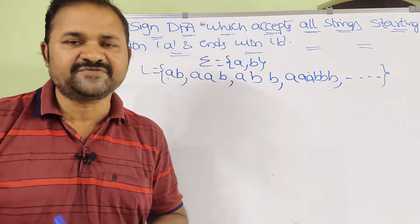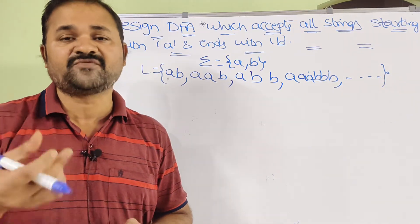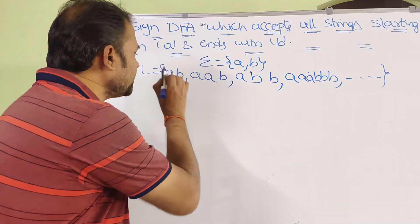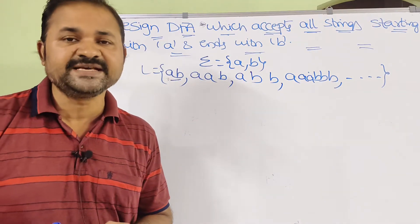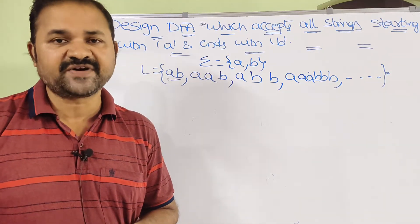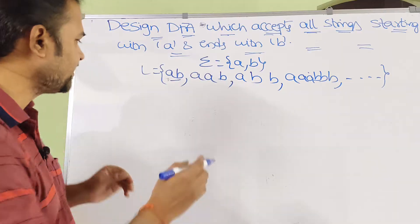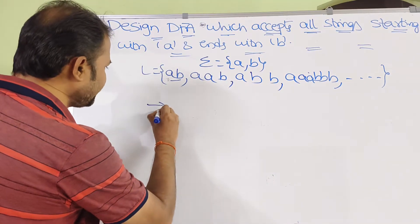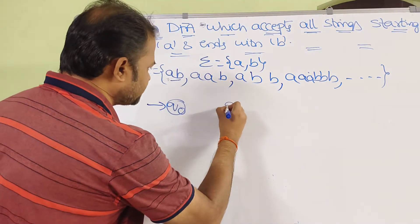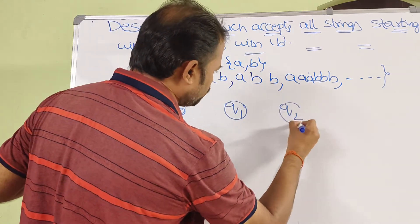Now let us construct the DFA. First we have to find the number of states. The minimum string is A, B, with length 2. So the maximum states required are 2 plus 1, that is 3 states. The initial state is Q0, next state is Q1, and the final state is Q2.